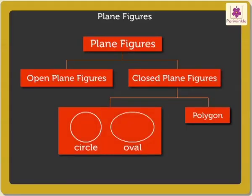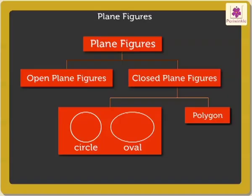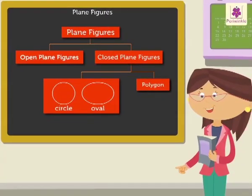Circle and oval are closed plane figures with curves. Thus, they are not polygons. Wasn't it fun learning about plane figures?